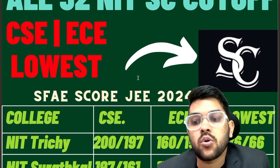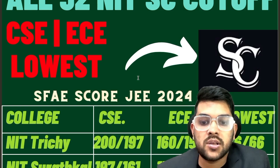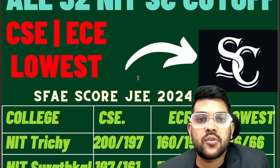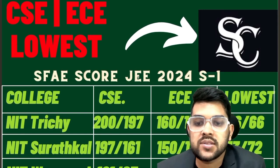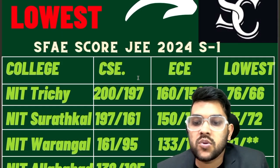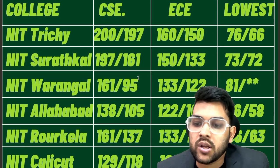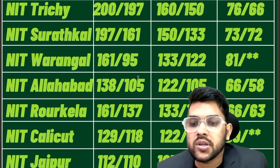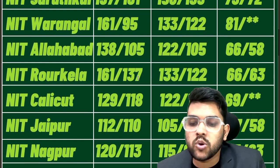For NIT Trichy, you need 200 marks for CSE, 160 for EC, and 76 for the lowest branch (male). For female: 197, 150, and 66. For Surathkal: 197, 150, 73. For Warangal: 161, 133, 81. For NIT Allahabad: 138, 122, 66. For Rourkela: 161, 133, 66. For Calicut: 129, 122, 69. For Jaipur: 112, 105, 67. For Nagpur: 120, 115, 65.